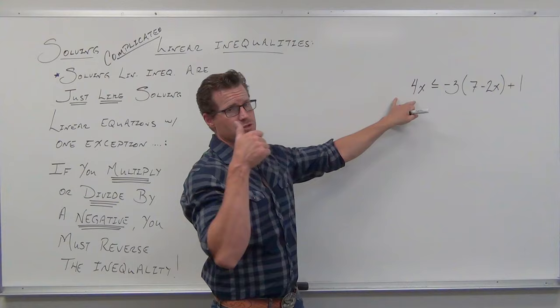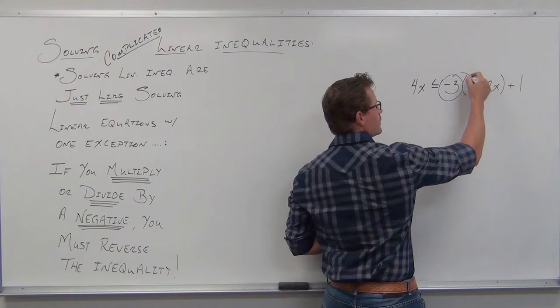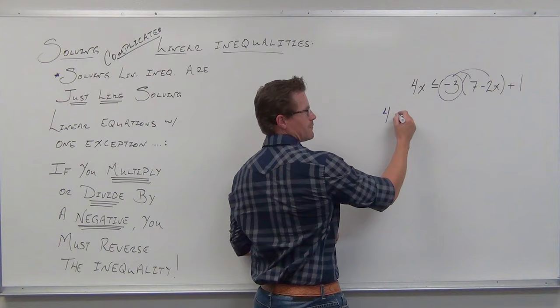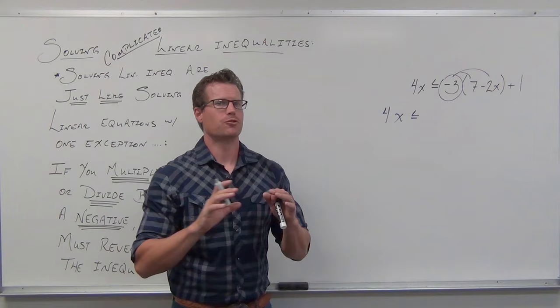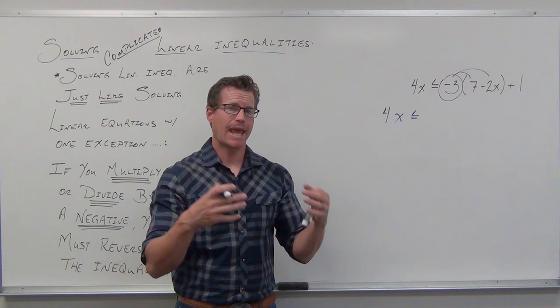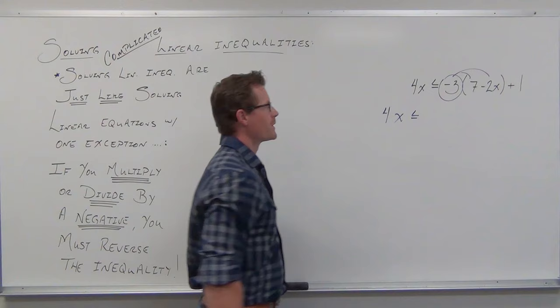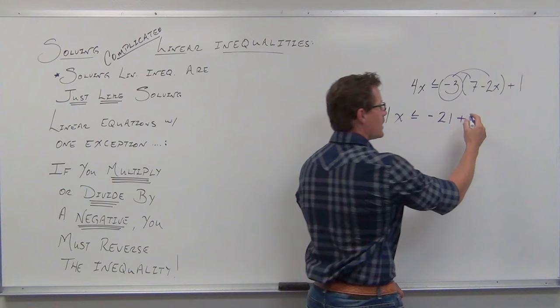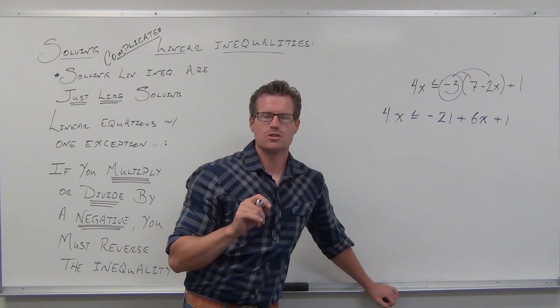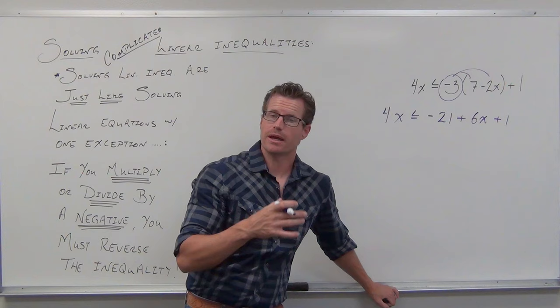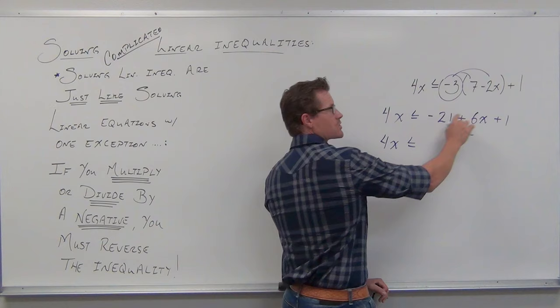So if this were a linear equation, I'd start by simplifying both sides. The left side looks great; the right side needs simplifying. I'm going to distribute — not to the one that's outside the parentheses — and we'll have 4x. The inequality is less than or equal to; I know that for sure, no matter what, because I'm not working on both sides yet. You can't reverse inequality if you're only working on one side or simplifying. This gives us negative 21, and negative times a negative is a positive, so plus 6x plus 1.